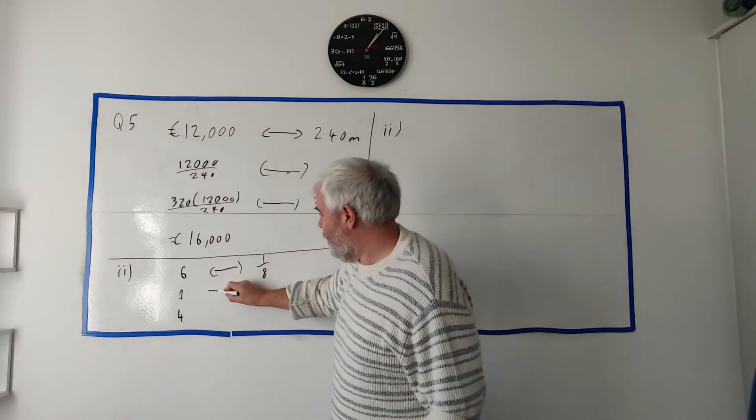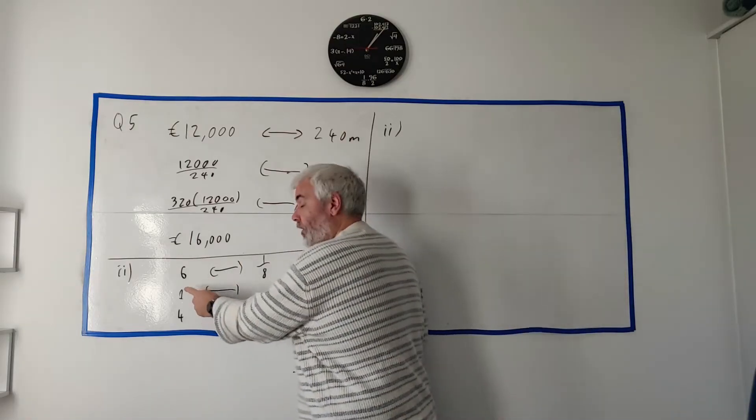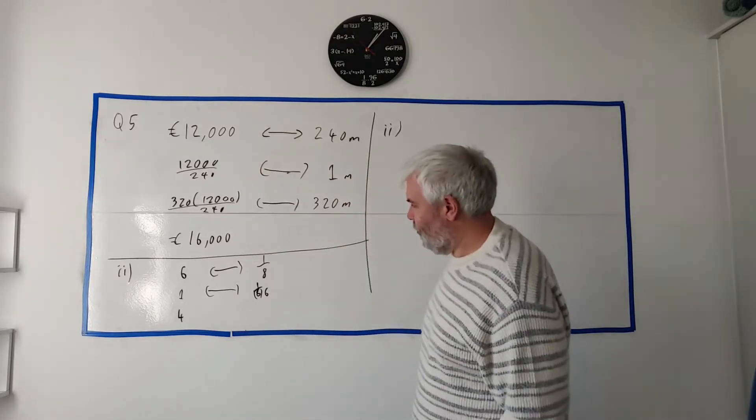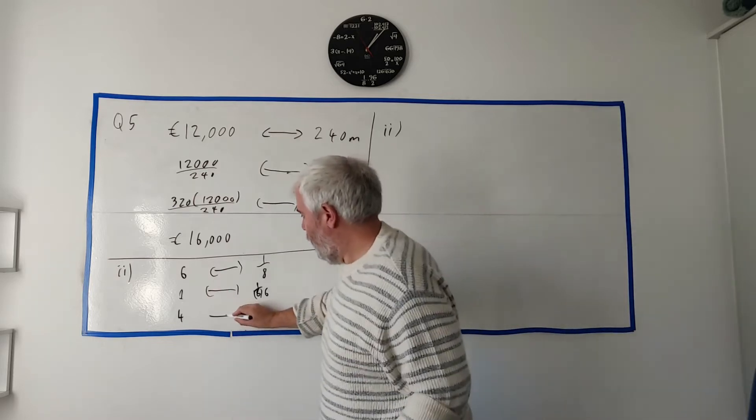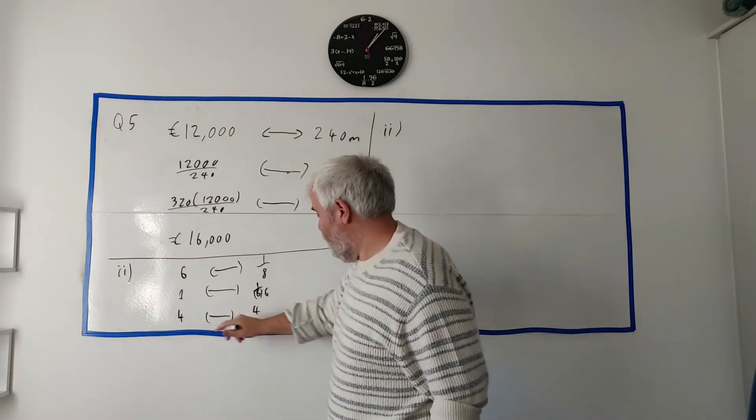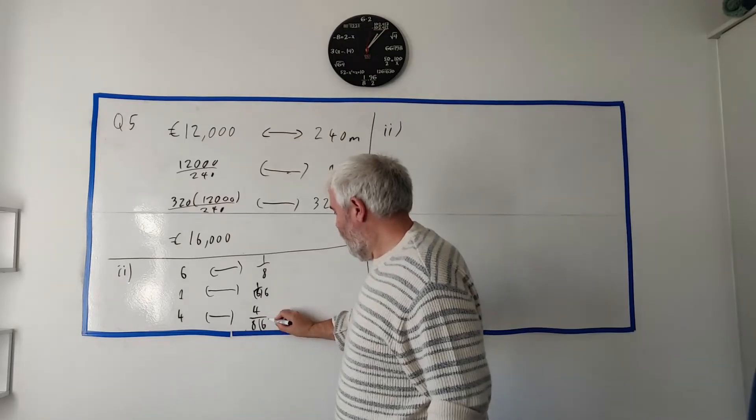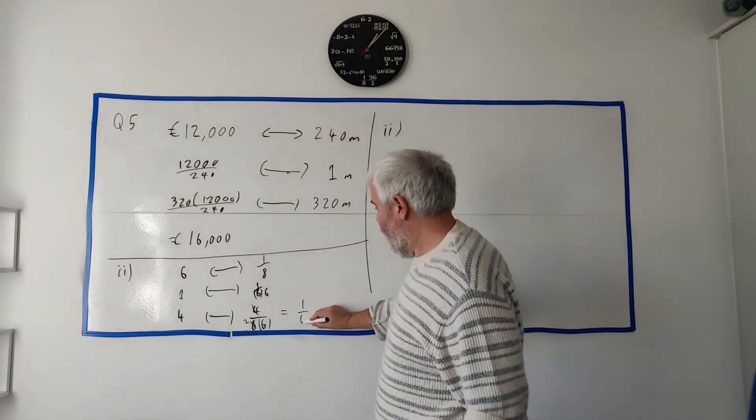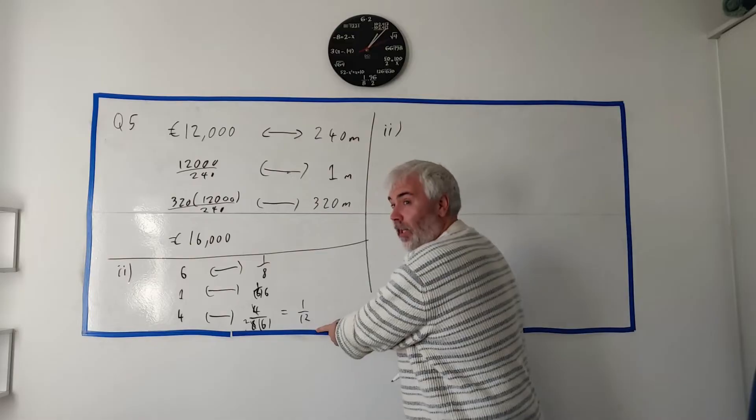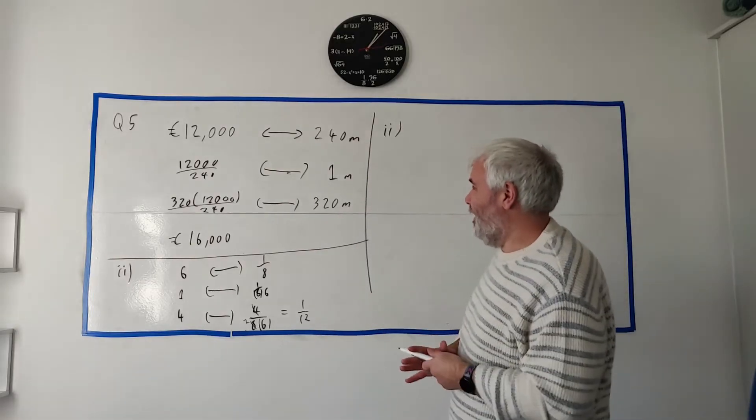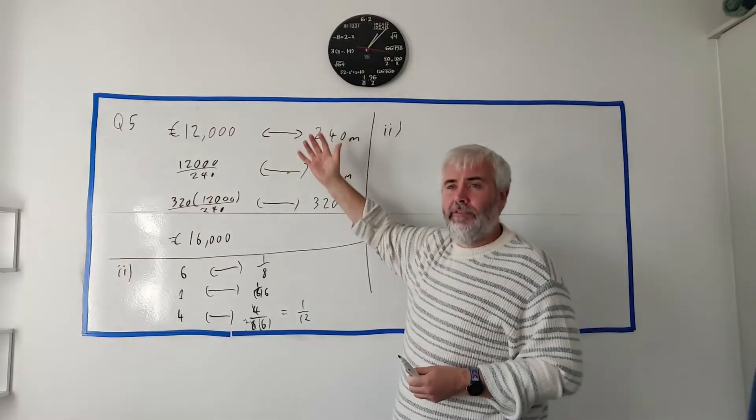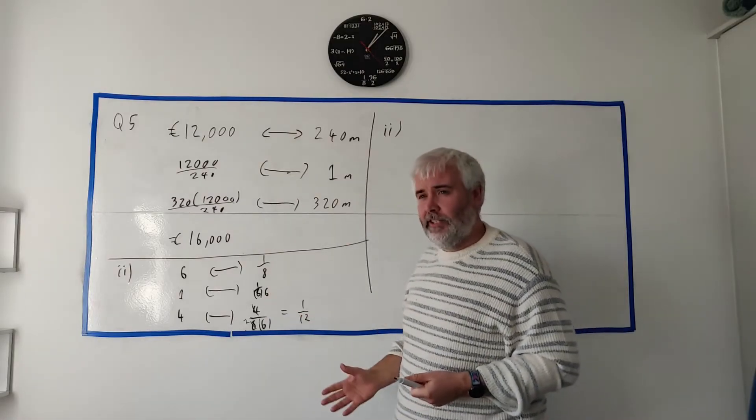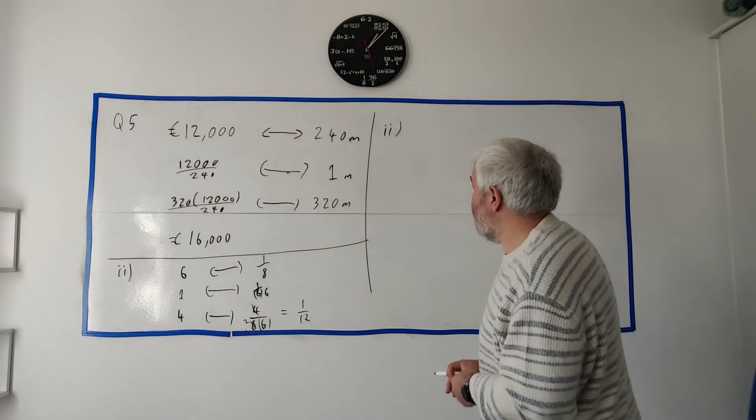I'm going to show you my thought process then I'll show you an easier way. So six goes to one over eight. To change from six to one, divide by six, so that's one over eight divided by six, which is one over 48. Going from one to four, multiply by four, so four over 48. The four goes into the eight two times, wait - four over eight times six. So that's the same as one over twelve - wait, let me recalculate. Four people working would take twelve days to do it.